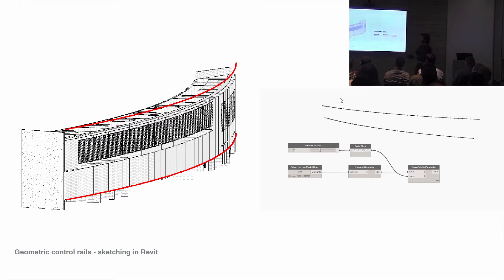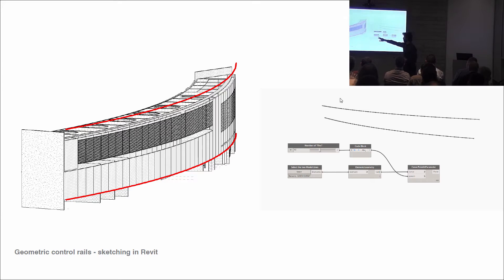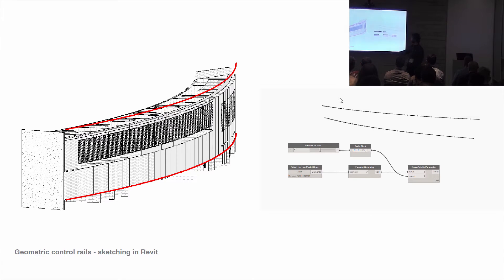We look at some control geometry first — the red model lines as you can see. These are the things that we bring into Dynamo. We select the model lines, get the element geometry, and use a start-end-step code block going from 0 at the start of the curve to 1 at the end with x steps in between.